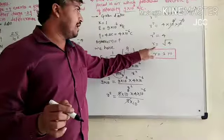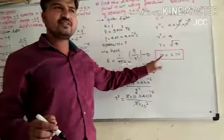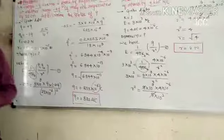R square equal to 4. R equal to square root, and square root of 4 is 2. Distance is 2 meter. Thank you.